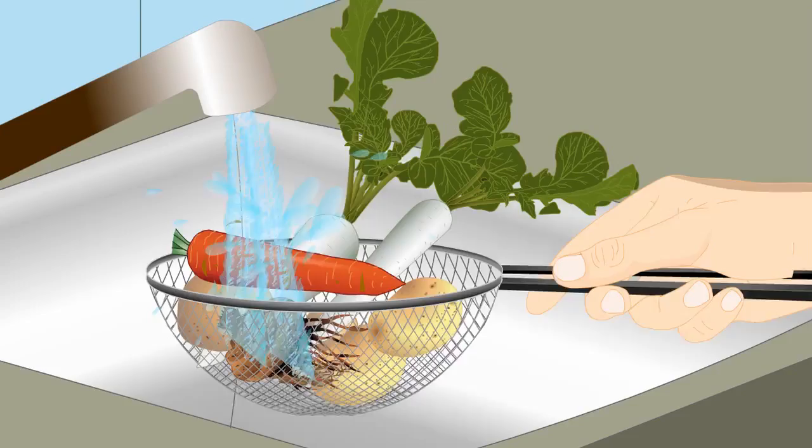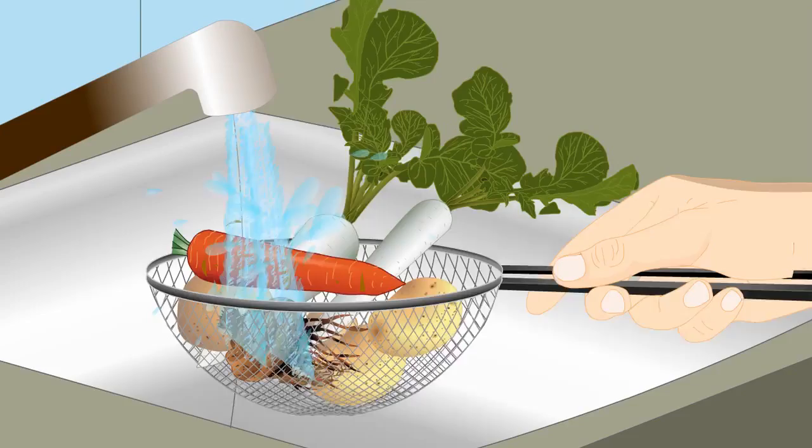Do not leave the tap running while brushing your teeth. Use the water in which vegetables and fruits are washed to water plants. Water from the washing machines can be used to wash bathroom floors.